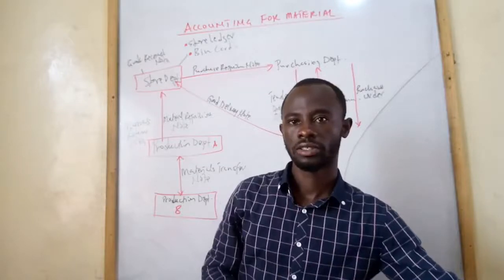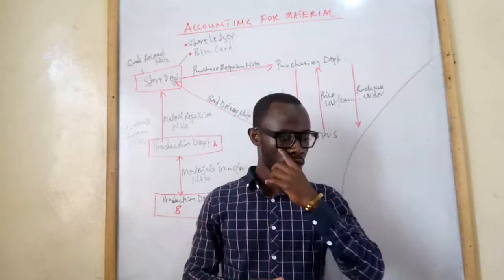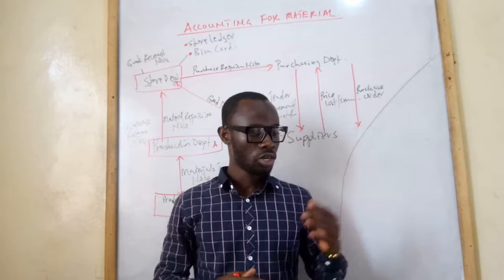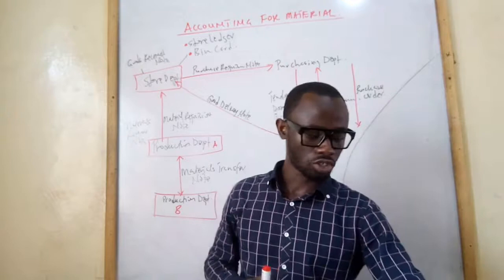Hi there, welcome to module 3: accounting for material. At the end of this module you should be able to explain the various ways of stock control, list the documents used by organizations for inventory control, understand the various stock levels and their concepts, calculate the cost of inventory, and prepare the material control account. These are what you have to understand when we talk about inventory or material.